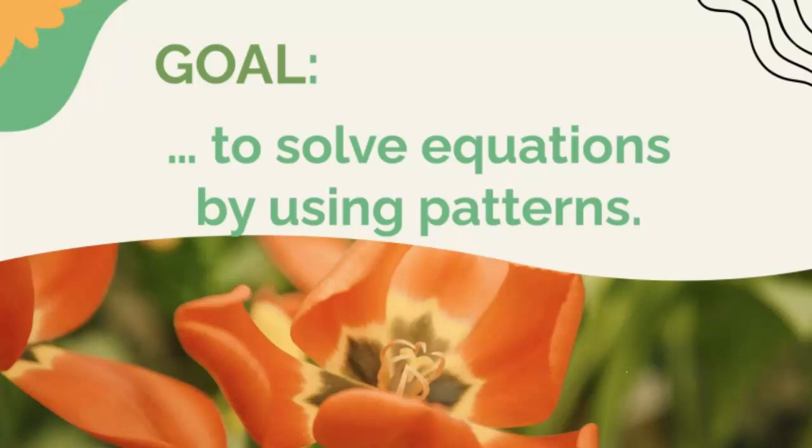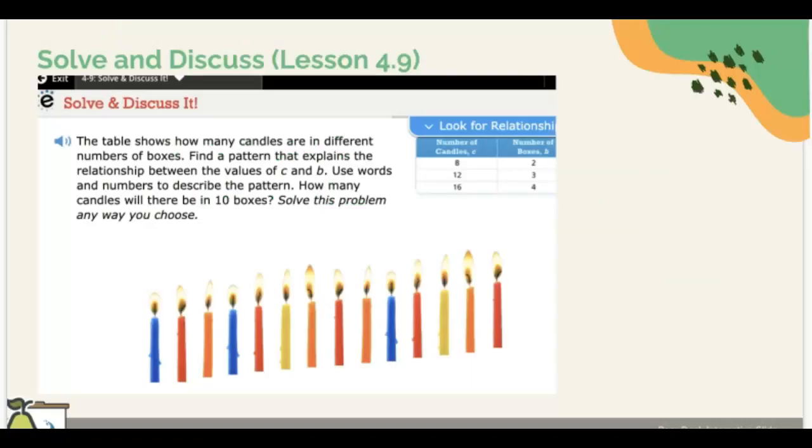Our task for today is let's solve and discuss this one. The table shows how many candles are in different numbers of boxes. Find a pattern that explains the relationship between the values of c and b. Use words and numbers to describe the pattern. How many candles will there be in 10 boxes? Solve this problem in any way you choose.